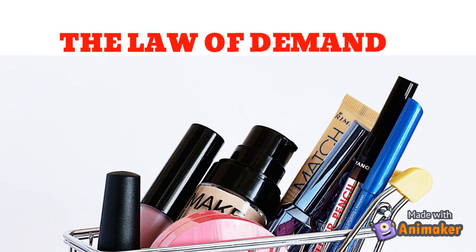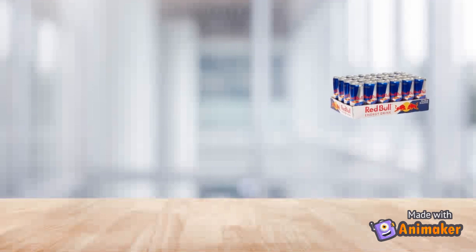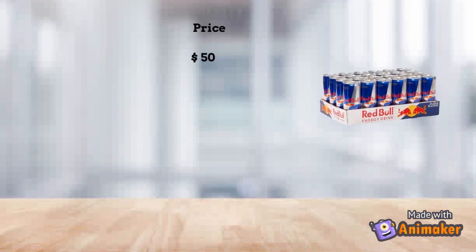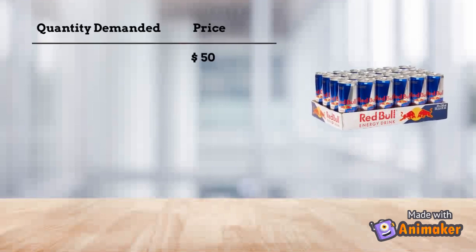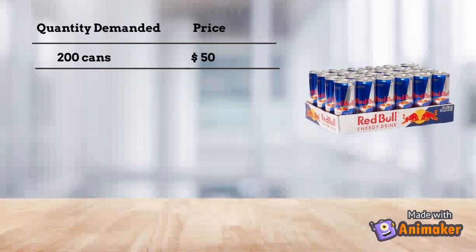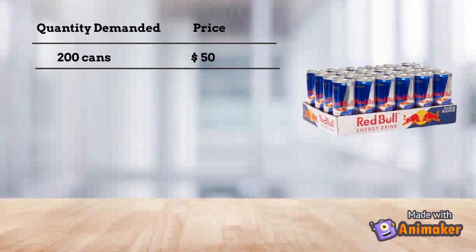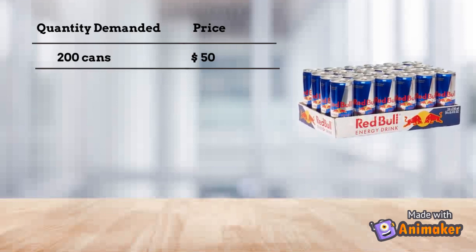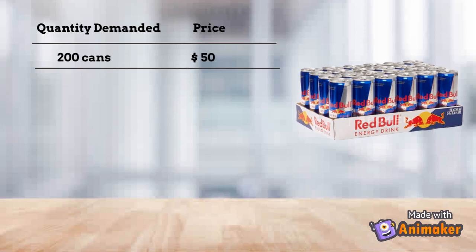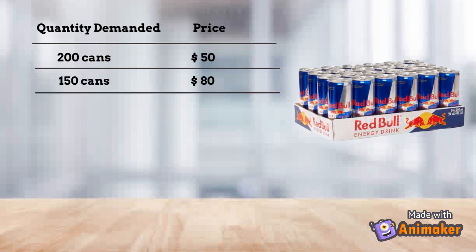Let's take an example. Suppose I wanted to buy Red Bull cans and I have a fixed amount of money with me. In the beginning, if one can costs $50, I can buy almost 200 cans. However, later the price of one can rises to $80 — now I can afford to buy only 150 cans.